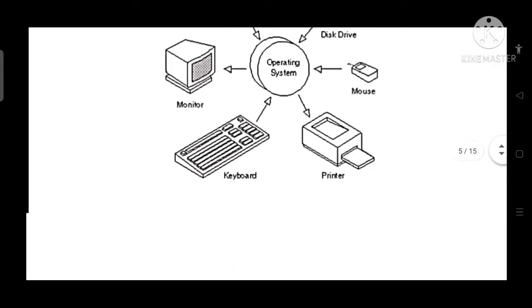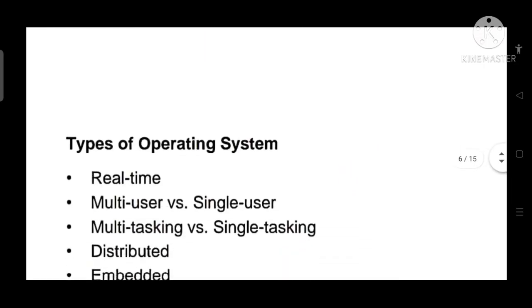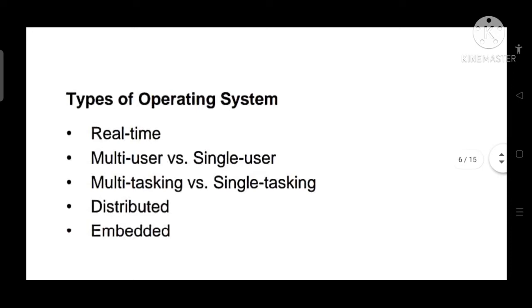Ab hum dekhte hain hamare paas kitne types ki operating systems hain. Hamare paas basically 5 types ki operating systems hain: pehla hai Real-time, doosra hai Multi-user and Single-user, teesra hai Multi-tasking versus Single-tasking, fourth one is Distributed, and the fifth one is Embedded.